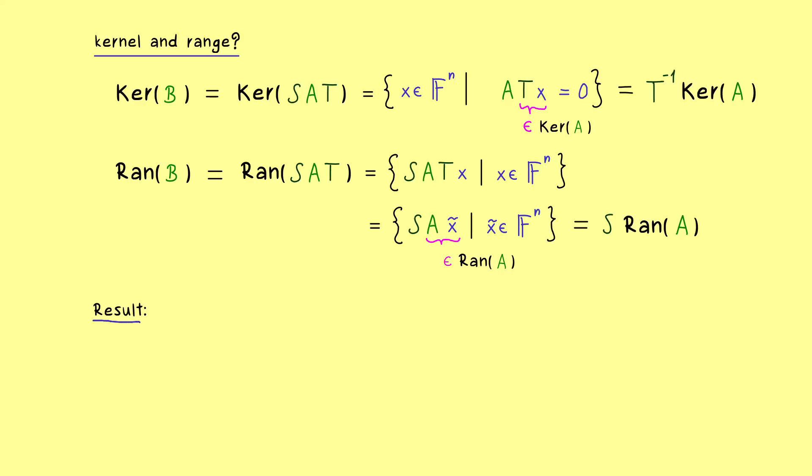So let's write down the result. If A and B are equivalent, then this implies that the rank of A is the same as the rank of B. And please never forget, rank of a matrix is simply a short notation for the dimension of the range of the matrix. And moreover we have the same thing for the nullity of the matrix, where the nullity is the dimension of the kernel.